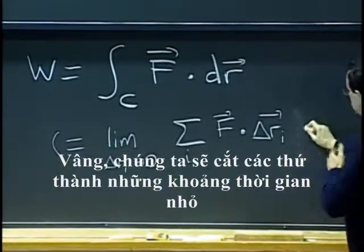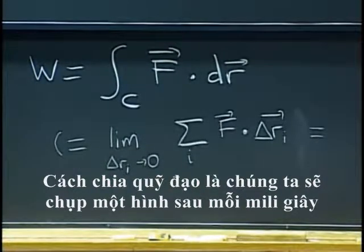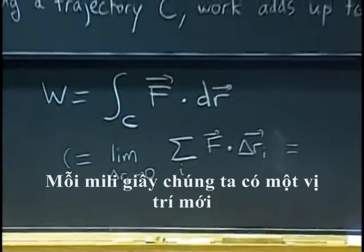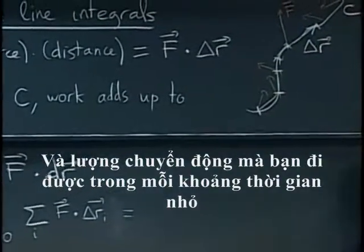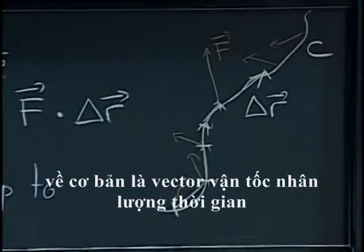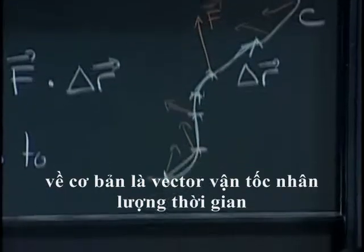So, the way that we split our trajectory is we just take a picture every, say, millisecond. So, every millisecond we have a new position. And the motion, the amount by which you have moved during each small time interval is basically the velocity vector times the amount of time.